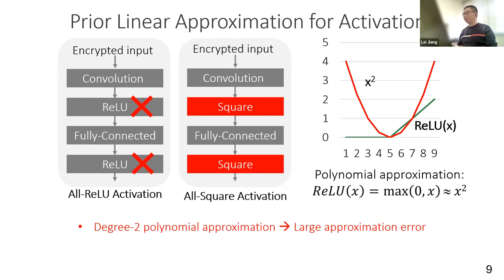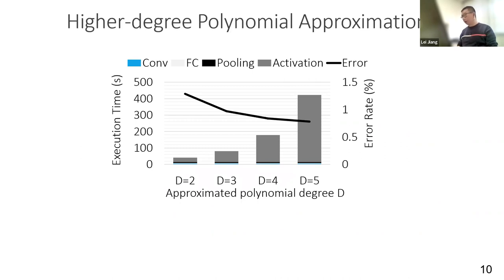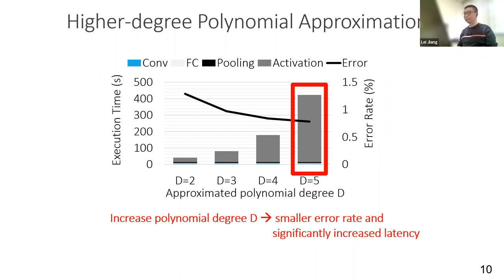When you see the degree-2 approximation polynomial, a natural question is: what about using a higher degree polynomial to approximate the activation? We tried degree 2, 3, 4, and 5 approximation polynomials. We can see that the error rate actually slightly decreases, so higher degree approximation polynomials do work. Unfortunately, the execution time of one inference also significantly increases. Now 99% of the latency is consumed by the degree-5 approximation polynomial activation. We need a fast and accurate ReLU.